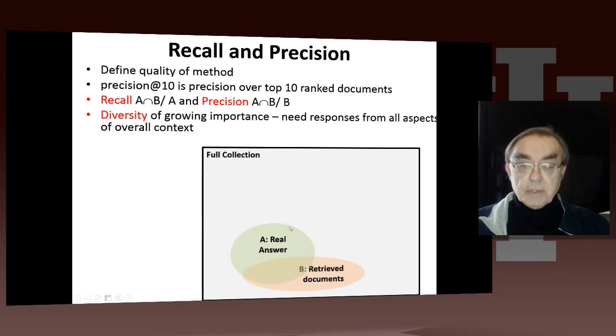And then we have the precision, which is the number of correct answers, divided by the total number of answers.